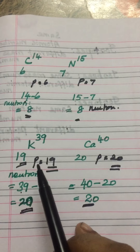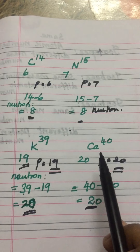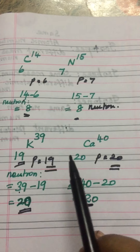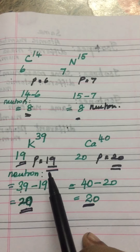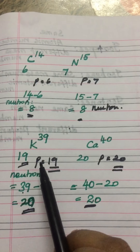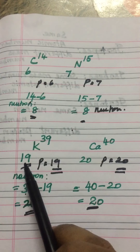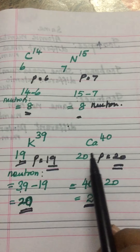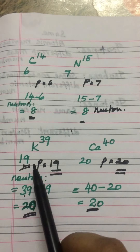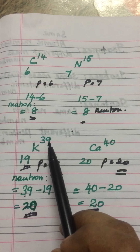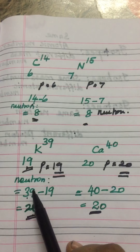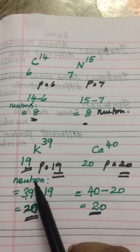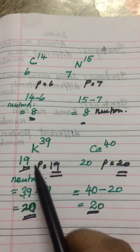The next example for isotones is potassium and calcium. These two elements have the same neutron value but different proton values. The proton value for potassium is 19 because the atomic number is 19. Calcium proton value is 20 because the atomic number is 20. Potassium mass number is 39. To find the neutron value, subtract the proton value from the mass number.